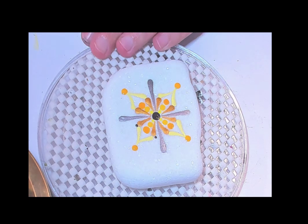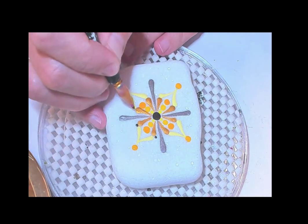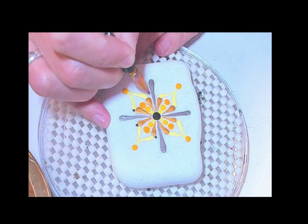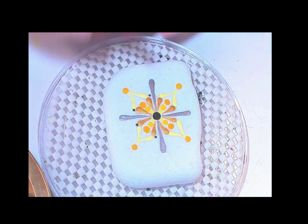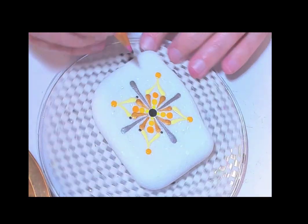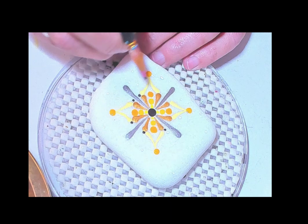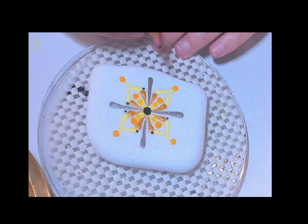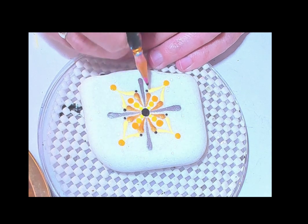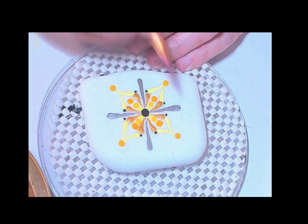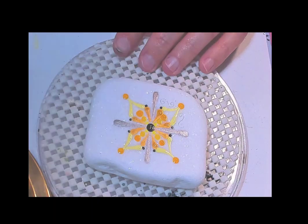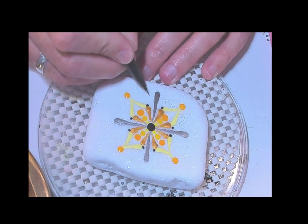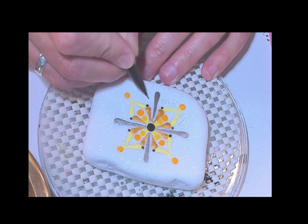Going back to that Indian yellow here for the outskirt dots. That's something with each piece too. I try to carry the colors throughout the entire piece just a little bit here and there. So it just creates a little bit more balance.